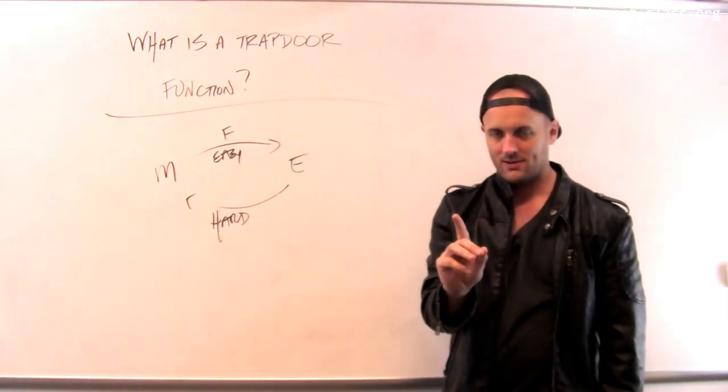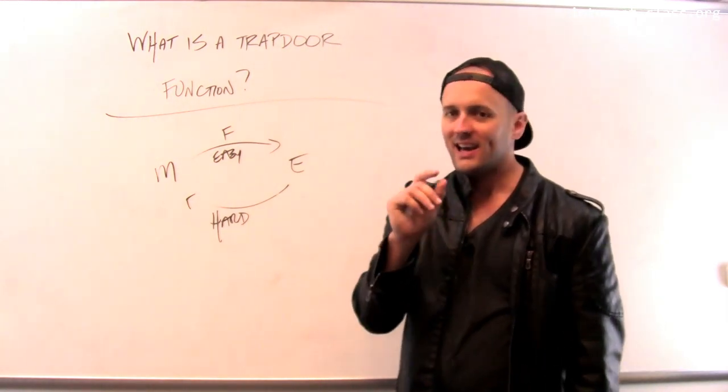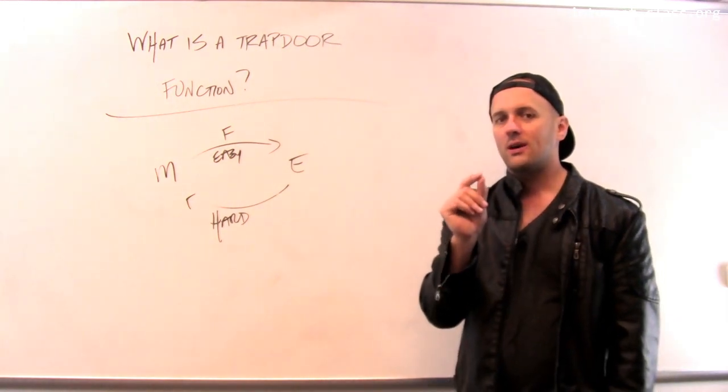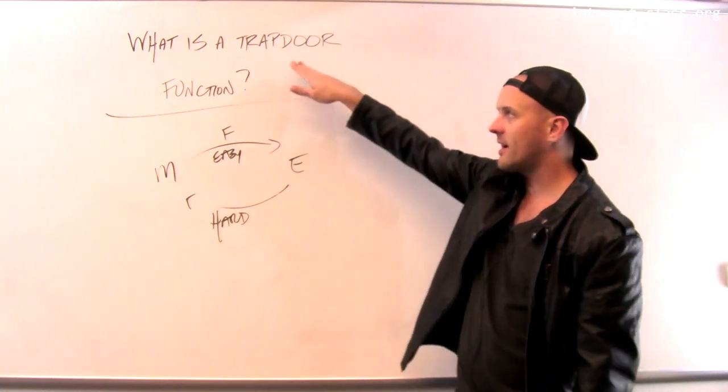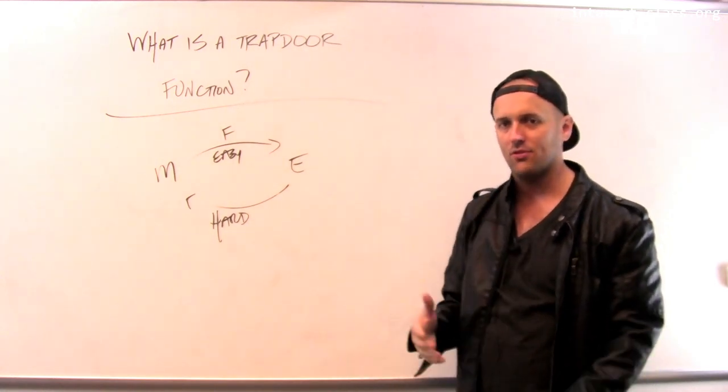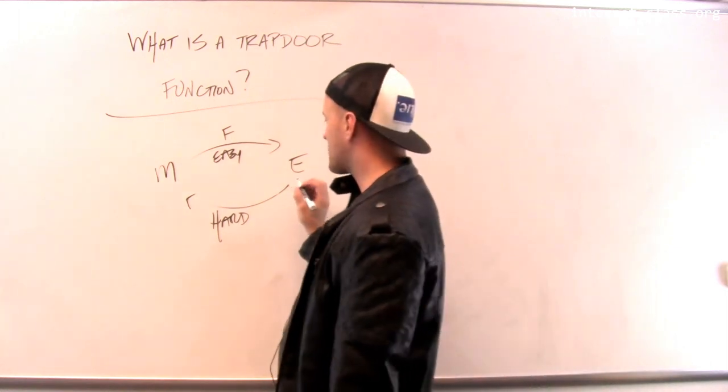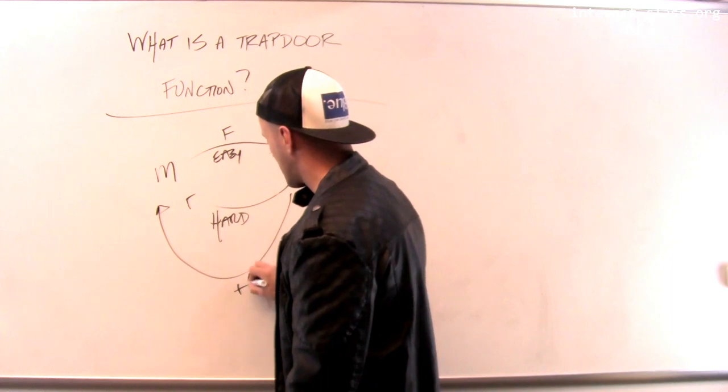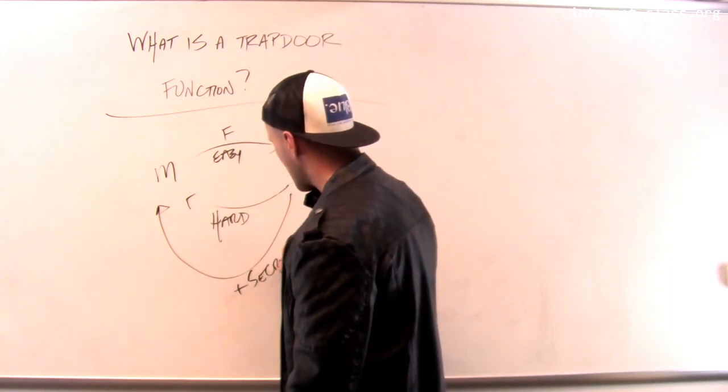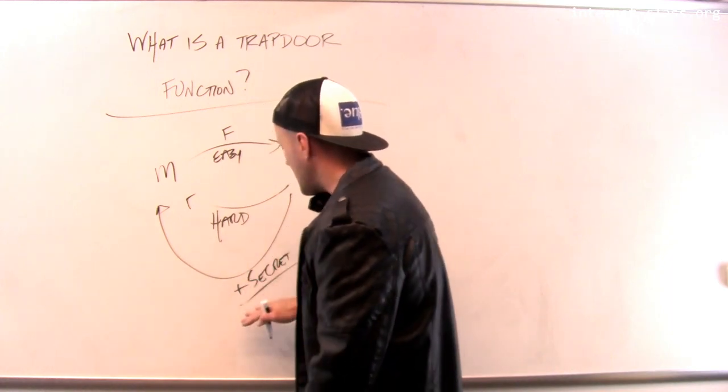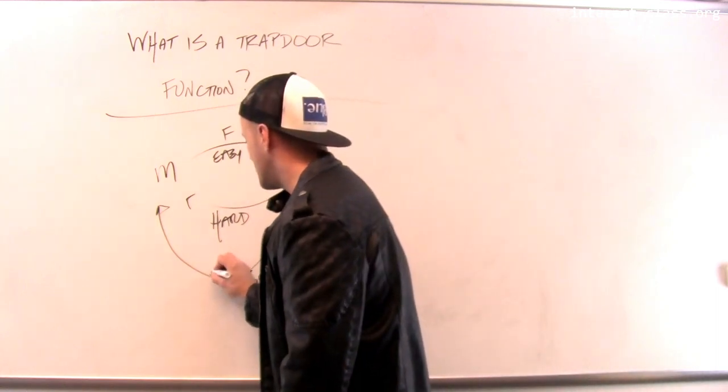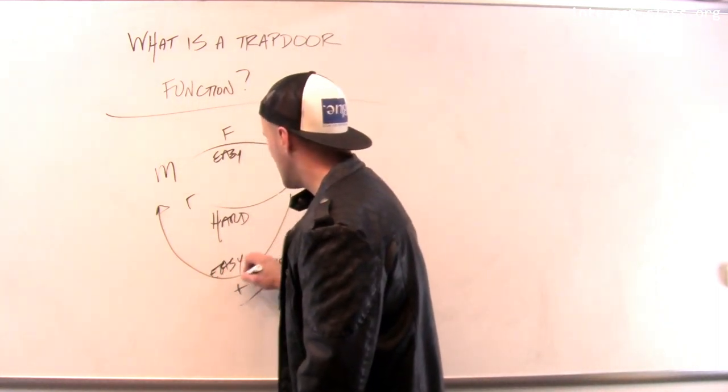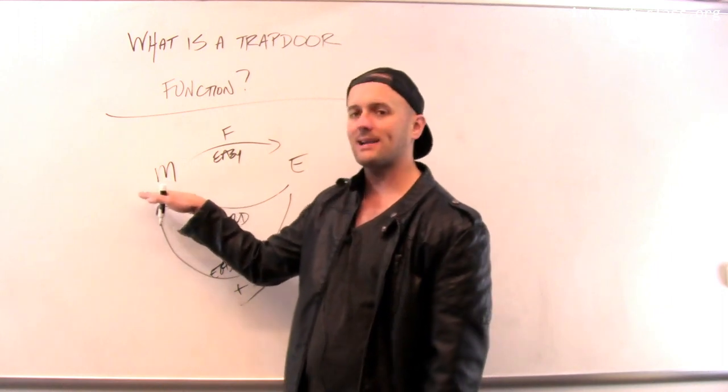Except, and this is the part that gets really cool, except if I know a secret. So there is a secret that unlocks the trapdoor of the trapdoor function. So there is some extra piece of information where if I have that, let's call this with the secret. So if I have the secret, then it is easy to take E and get back to M.